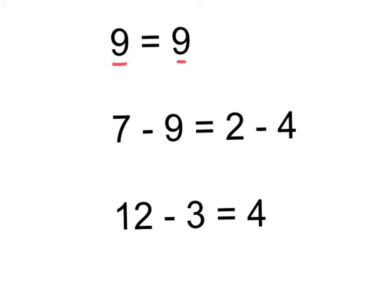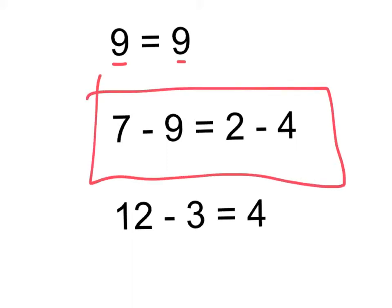Let's look at the second one. I see it says 7 minus 9 equals 2 minus 4. So what I know is that 7 minus 9 is negative 2, and 2 minus 4 is also negative 2. So these are true.